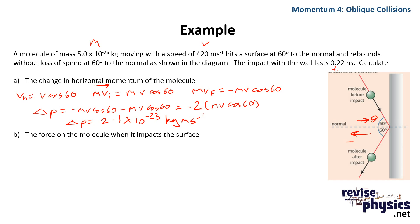Now it wants to know the force on the molecule when it impacts the surface. Well, force is change in momentum over time. We worked out change in momentum in the last question. The time we've been given as 0.22 nanoseconds. So that's equal to 2.1 times 10 to the minus 23 over 0.22 times 10 to the minus 9, because it's nano. And when we plug those numbers into the calculator, we get an overall force of 9.55 times 10 to the minus 14 newtons.